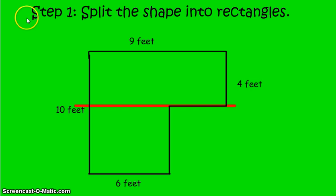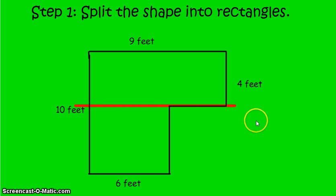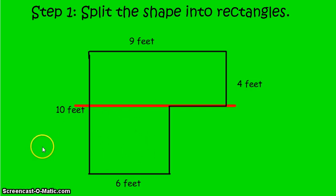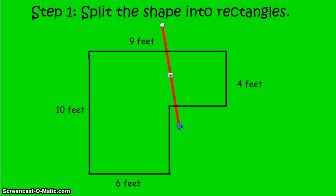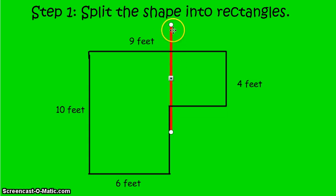The first step is to split the shape into rectangles. I went ahead and inserted a line so that now I have one rectangle up here and one down here. I could have also drawn the line the other way — either way, I'd have two different rectangles. It doesn't matter which way you draw your line, as long as you end up with two rectangles or squares.